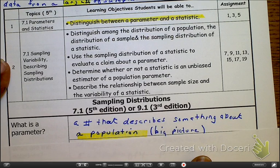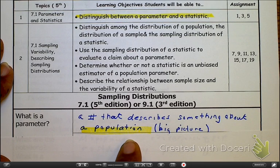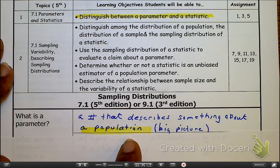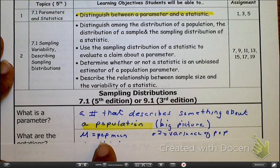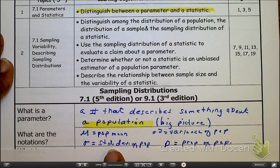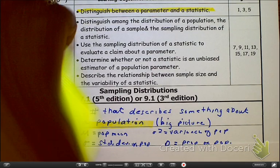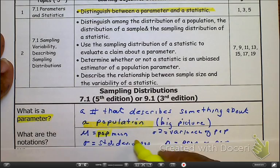A parameter is another way of saying population right now. Specifically, it's a number that describes something about a population. So there's something about the big picture, because remember the population is the big picture. We're talking about potentially the population mean μ, or the variance σ², or the standard deviation of the population σ. All of these are notations that I use for parameters, because the parameters are always about the population.